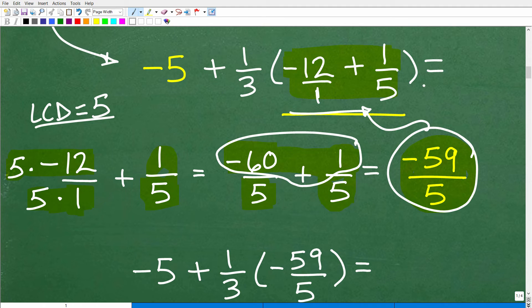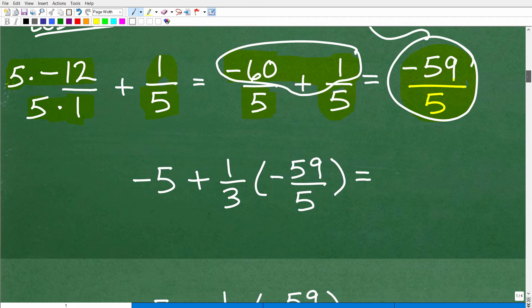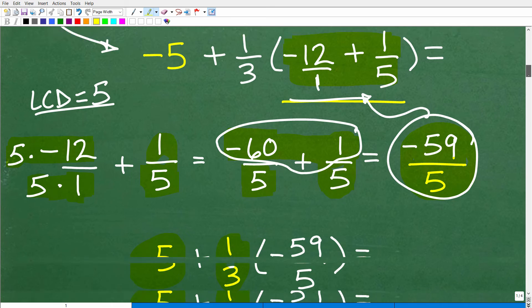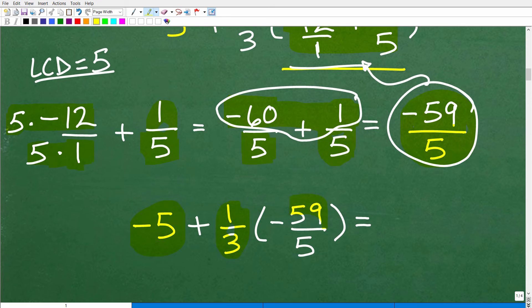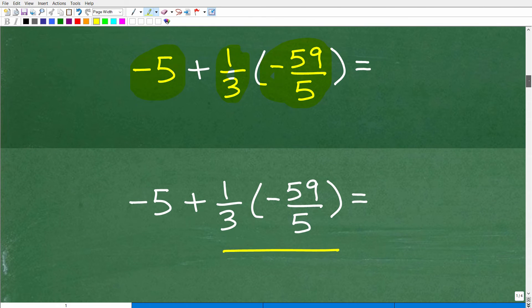All right, so -59/5 is the sum of these two numbers, -12 + 1/5. Okay, so this part of the problem is done. We're just working this down step by step. So that gets us to this point. So we have -5 + 1/3. And when we added up those two numbers, -12 and 1/5, we got -59/5.